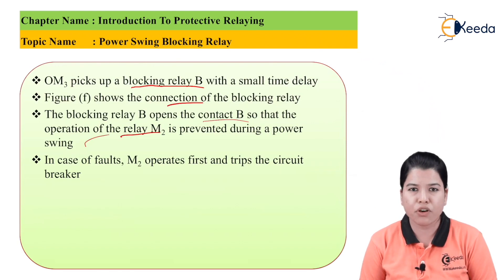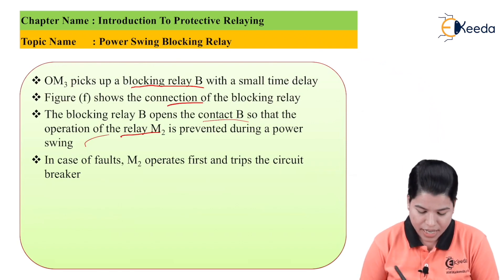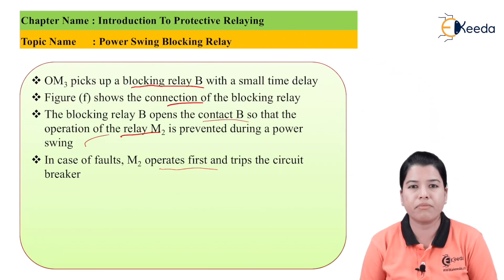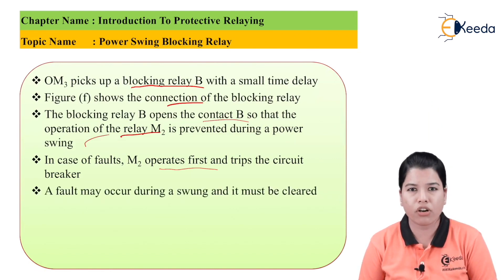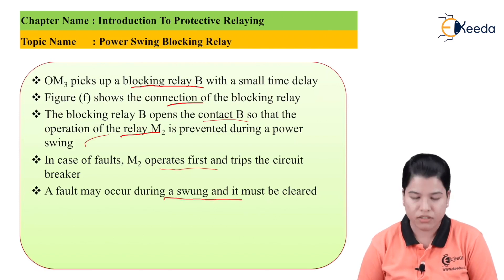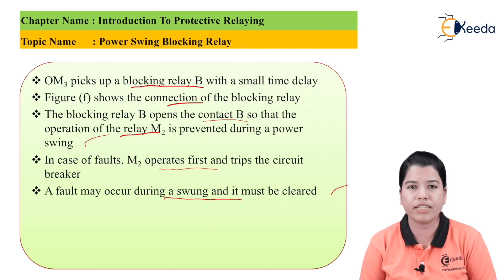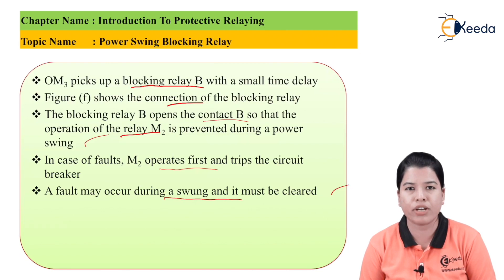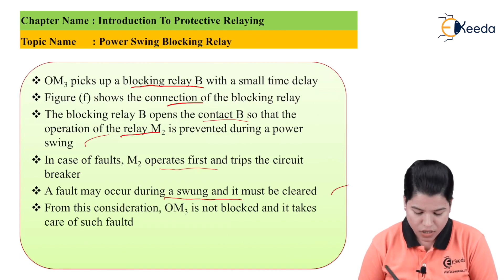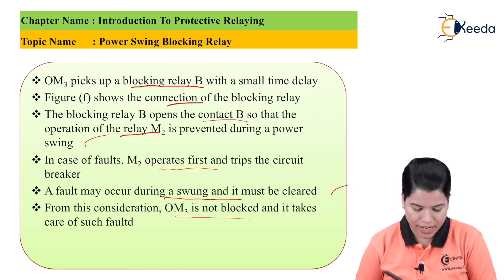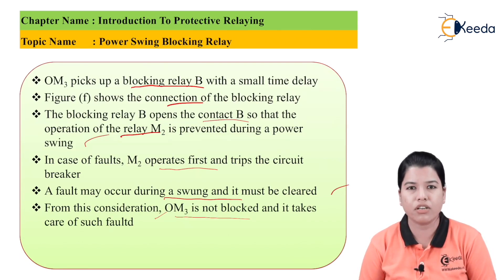If a fault occurs, M2 operates first and trips the circuit breaker. A fault may also occur during a swing and must be cleared — M1 and M2 take care of such a case. OM3 is not blocked in that situation, so faults occurring during a power swing are still cleared by the zone 1 and zone 2 relays.